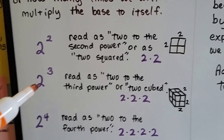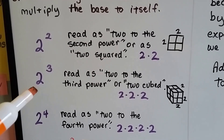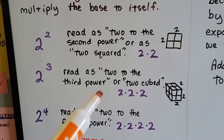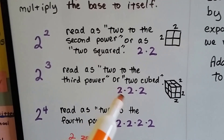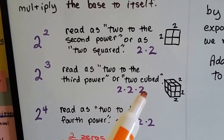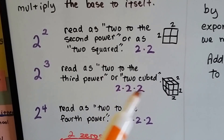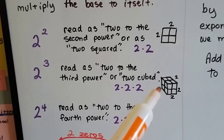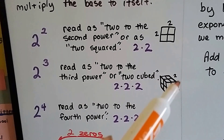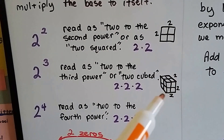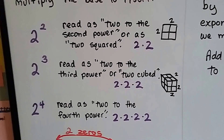When we see 2 with a little 3 exponent, it's read as 2 to the third power, or 2 cubed. It means 2 times 2 times 2 — we multiply 2 to itself 3 times. Think of a cube: there's 2 going this way, 2 going high, and 2 going wide. It's a cube.